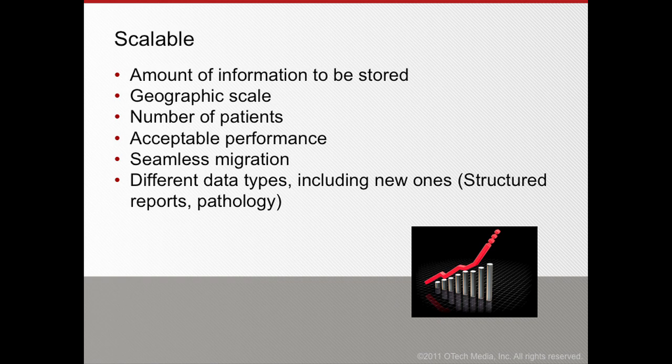Also, geographic scale — an enterprise might be covering a certain large area. We need to make sure that we can cover a certain number of patients. We also need to have acceptable performance. When we scale a system, the system should not slow down, at least not to a degree that is really noticeable or not acceptable. When we pull up some data, it should be there within two seconds, maximum three. Anything more than three seconds is not acceptable because it will really impact the efficiency of the people needing to access that data.